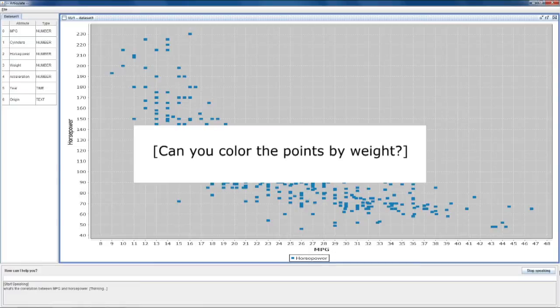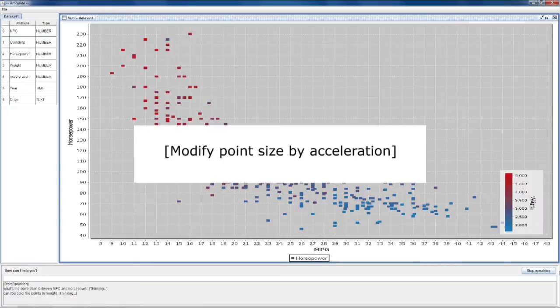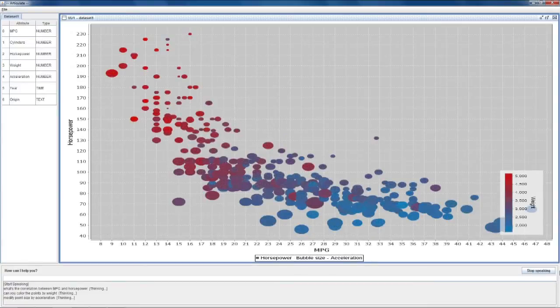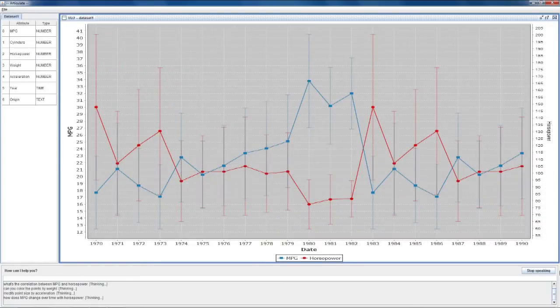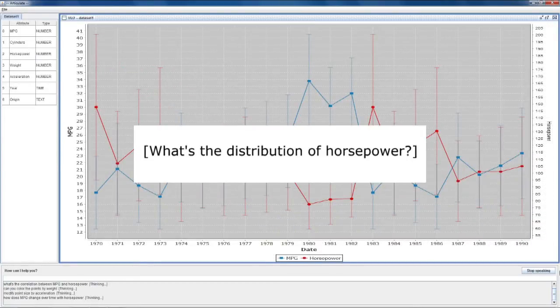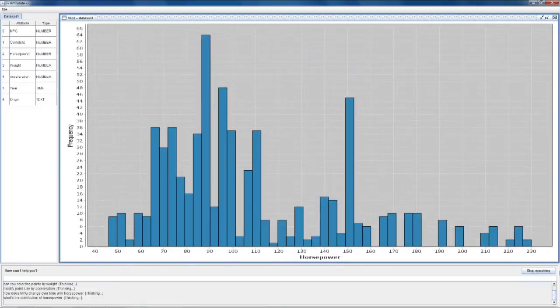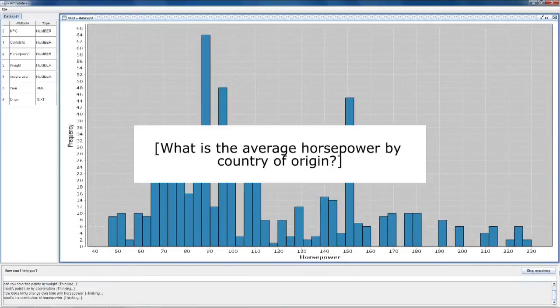Can you color the points by weight? Modify point size by acceleration. How does miles per gallon change over time with horsepower? What's the distribution of horsepower? What is the average horsepower by country of origin?